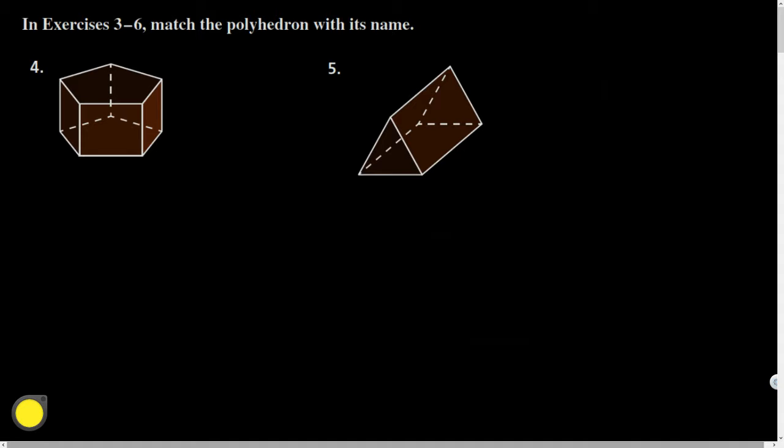We were yesterday classifying polyhedron, three-dimensional solids. We were slicing them up, looking at cross sections, drawing them a little bit. The first thing it said here was match the polyhedron with its name. Now there were a couple main categories we broke polyhedron into, which were prisms, which are kind of box-shaped.